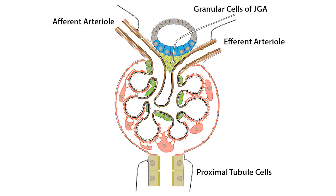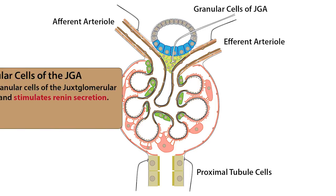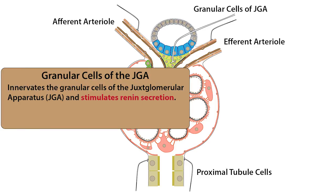Sympathetic input to the granular cells of the juxtaglomerular apparatus will increase renin secretion from these cells. Renin plays an important role in blood pressure regulation through angiotensin II-dependent vasoconstriction and aldosterone-dependent sodium reabsorption along the collecting duct, both of which help maintain blood pressure.